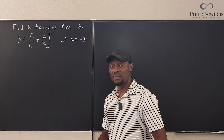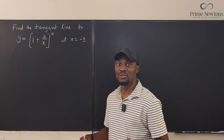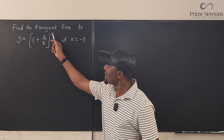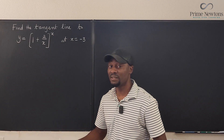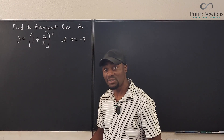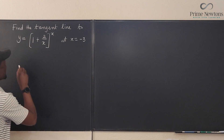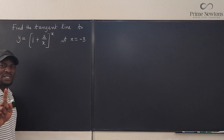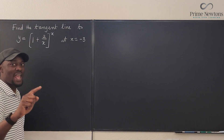The very first thing we're going to do is find the derivative of this function. It's not a usual function — because you have the exponent being a variable, we'll have to do some implicit differentiation by introducing natural log to both sides of the function. But before we take the derivative, why don't we find the value of y when x is minus 3?